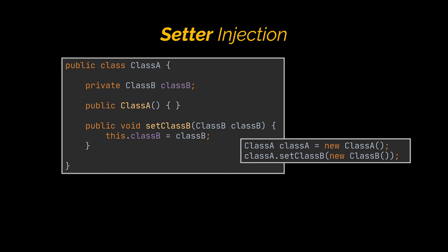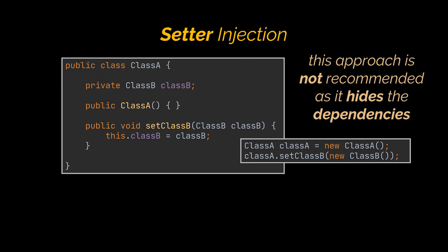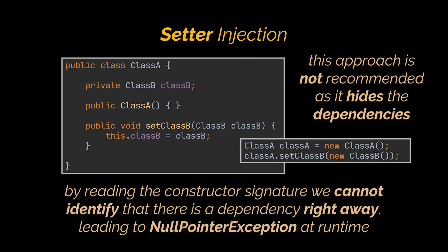However, this approach is not really recommended because you see, by doing that we hide that dependency. By reading the constructor signature or creating our main object, we cannot identify that there is a dependency right away, which might cause a null pointer exception at runtime.